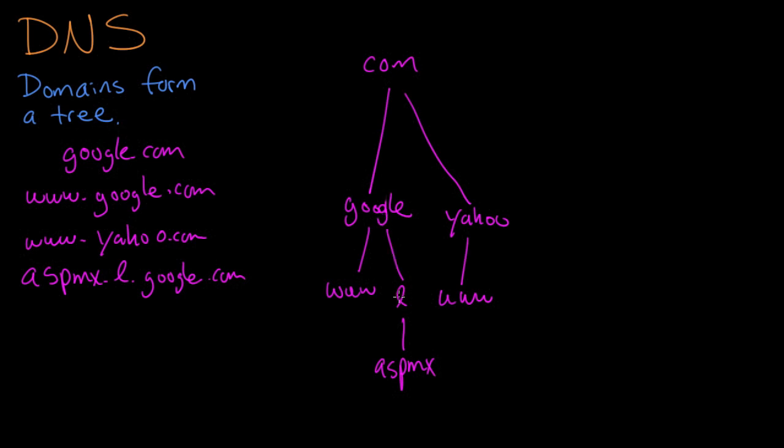So now we've got one, two, three, four layers to this tree here. There's more at the top than just com. There's things like edu, so a school like ucsd.edu.